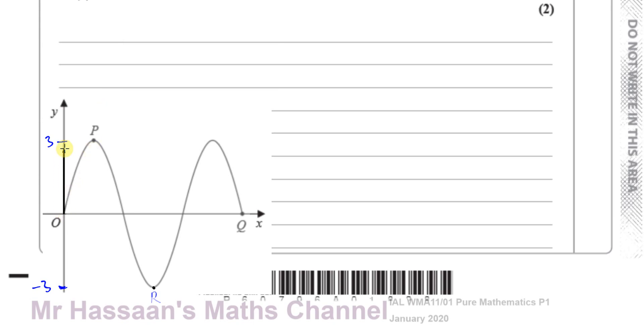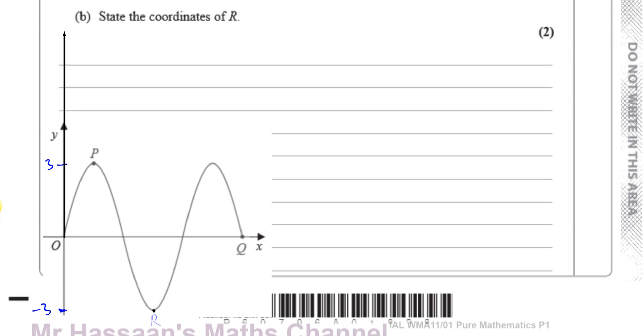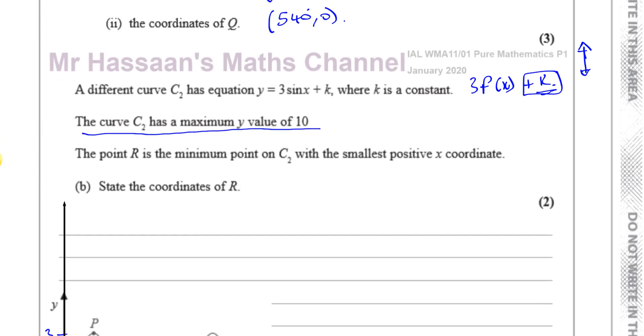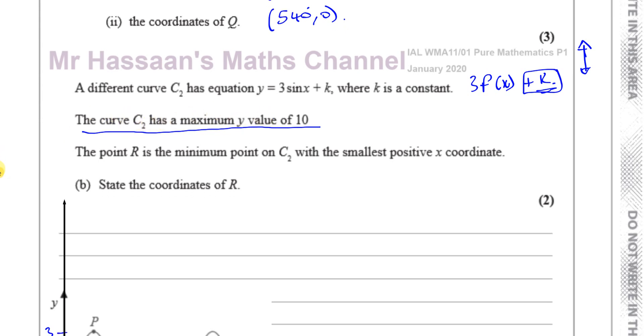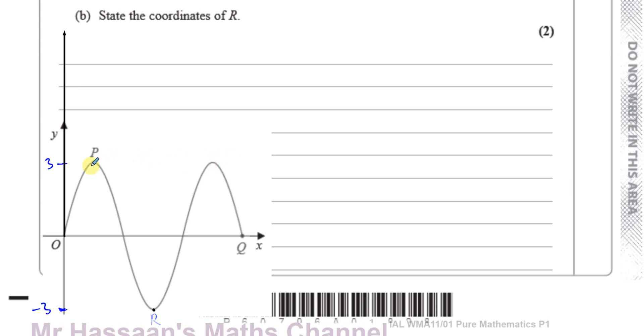It tells us that P has moved such that the curve C2 has a maximum y value of 10. So this maximum value, for example point P which is 3, has now gone up to 10. The P has moved up to 10 now - the coordinates of this point are now (90, 10). Basically the whole curve has moved upwards by 7 units.